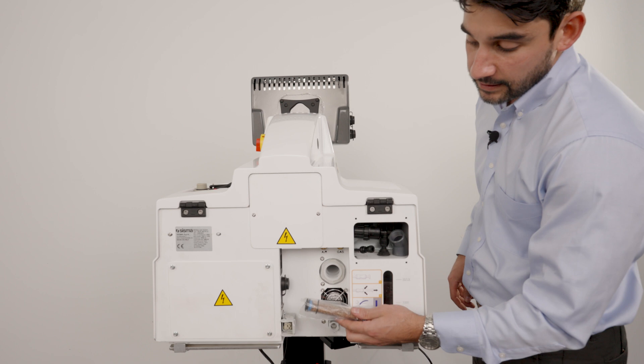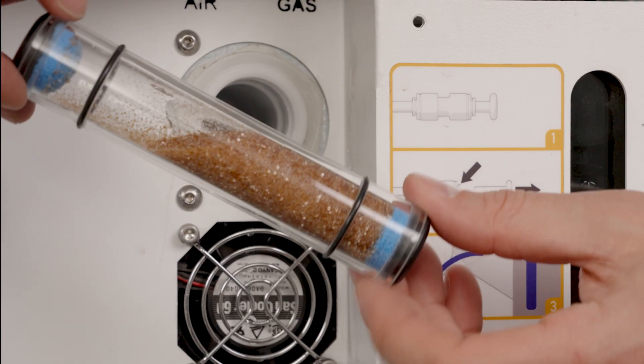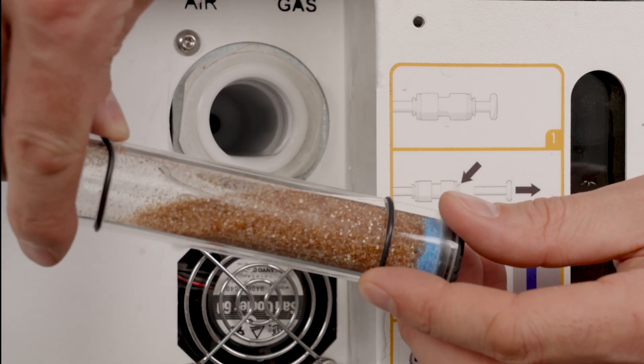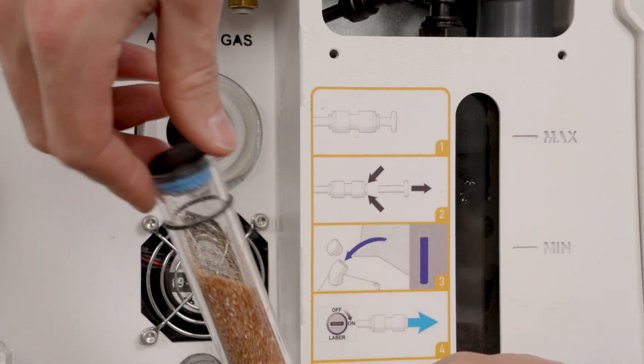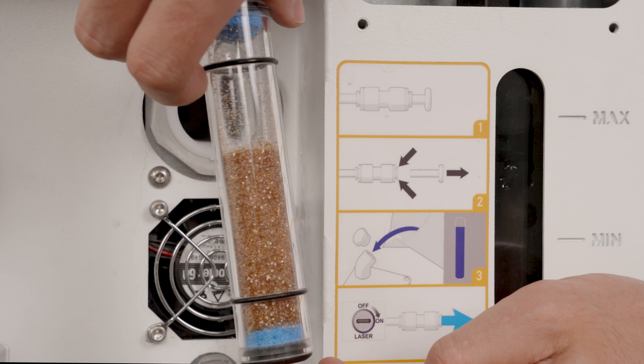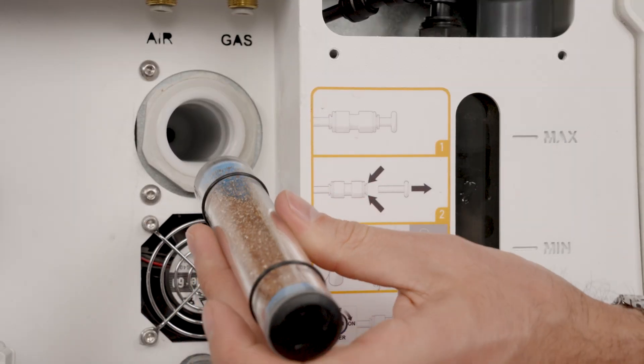Here's our replacement deionizing filter. We want to take it out of the plastic and inspect it. We want to make sure these o-rings are sitting properly on the little grooves and that the caps are in place and this is a normal fill level for the resin. We can insert it either direction into the holder.